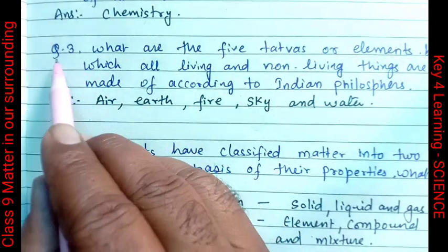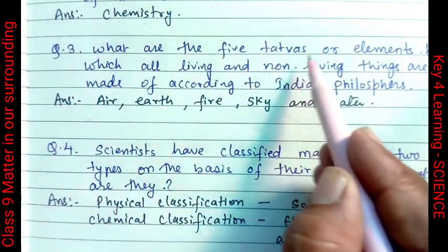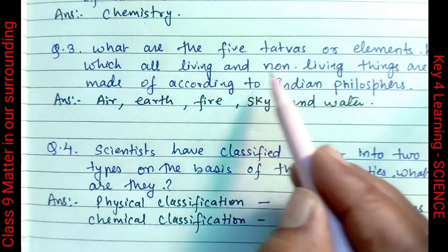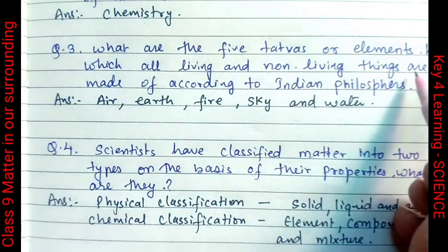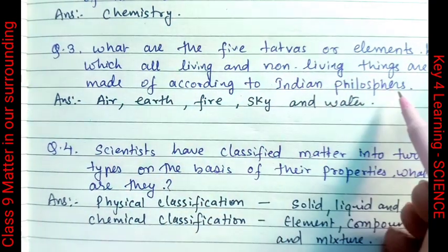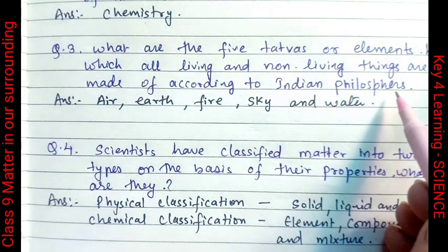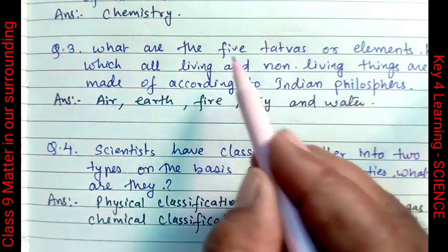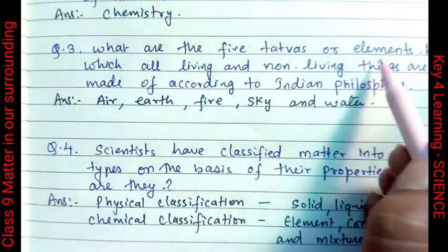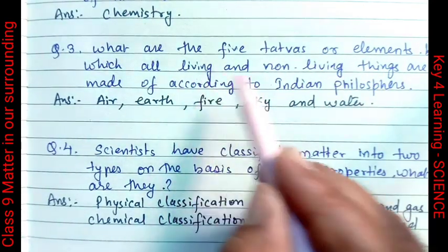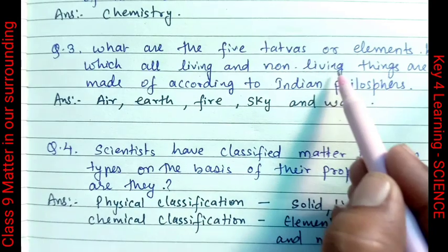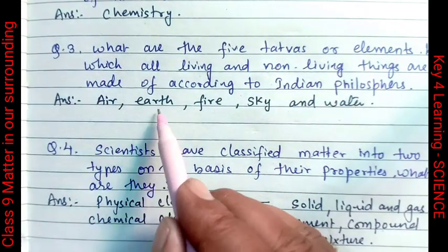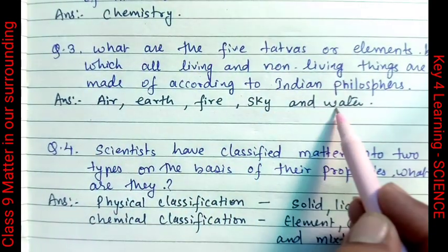Question number 3: What are the 5 tattvas or elements by which all living things and non-living things are made of, according to Indian philosophers? The answer is: air, earth, fire, sky, and water.